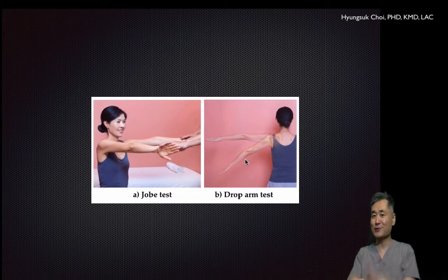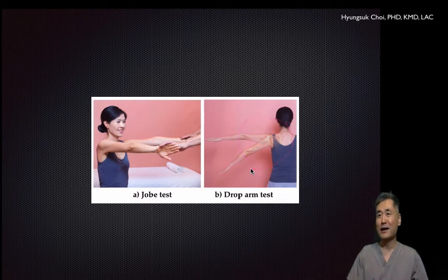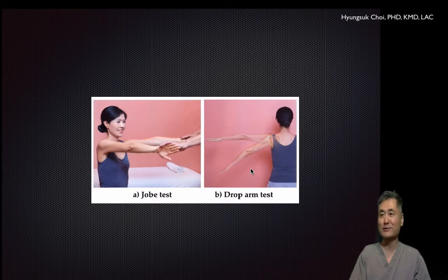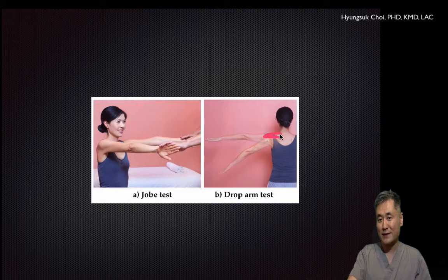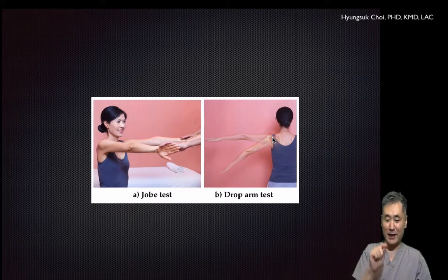When the patient cannot hold their arm, that means a grade three tear of the supraspinatus — or a very severe grade two tear, which we can call a half-thickness tear. The Jobe test is conventionally called a test for supraspinatus tendon integrity, tendinitis, or tendinopathy — same mechanic but different severity.